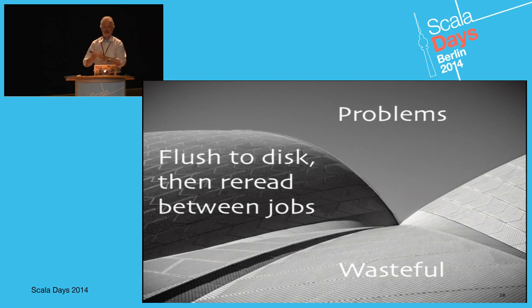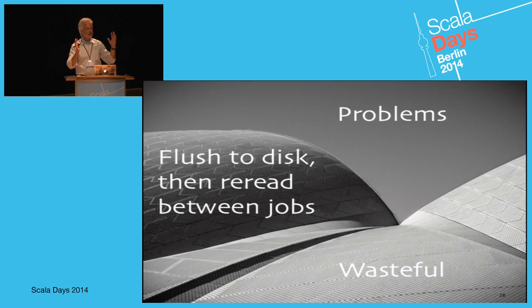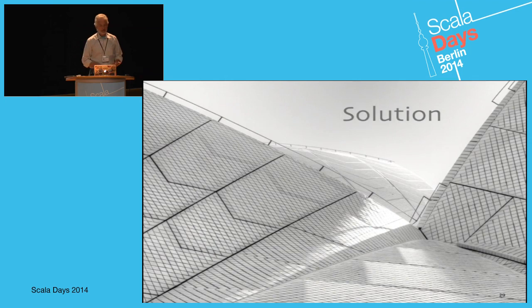The next, maybe worst, problem is that Hadoop is massively inefficient. A lot of algorithms sequence multiple map-reduce steps one after another. The problem is Hadoop doesn't understand that's what you're doing and flushes all that intermediate data to disk between jobs — potentially terabytes of data — and that's incredibly inefficient. Just by solving that problem, you can easily get orders of magnitude performance improvement.